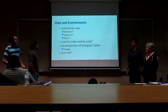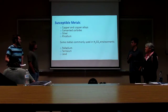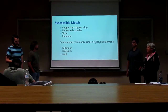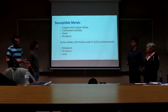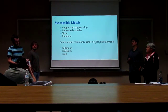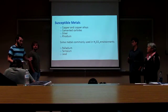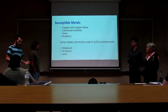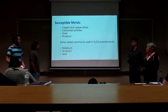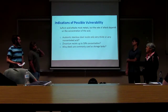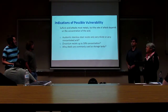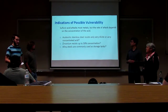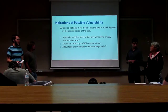Sulfuric acid is a common component in acid rain. Some susceptible metals are copper and copper alloys, cemented carbides, silver, and rhodium. Metals commonly used in sulfuric acid environments include palladium, tantalum, and lead — though palladium is less resistant in hot environments. Tantalum and lead are suitable for boiling sulfuric acid. Sulfuric acid attacks most metals, but the rate of attack depends on concentration. Stainless steels resist either very dilute or very concentrated acid, making them suitable for sewage-type environments. Zirconium resists up to 50% concentrated sulfuric acid.